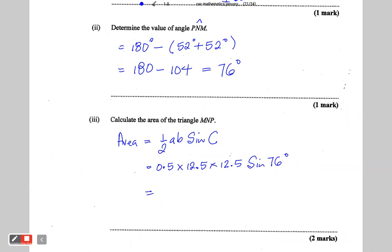So lastly, we'll just put this in a calculator and press equal. So this is 0.5 times 12.5 times 12.5, the sine of 76 degrees. The answer here is 75.8. And this is centimeters square. So the area of the triangle to three significant figures is 75.8, and that is centimeters square. And that is the end of the question.